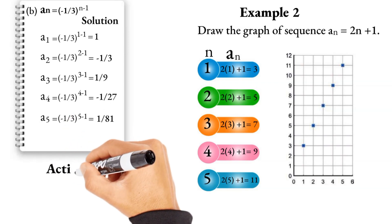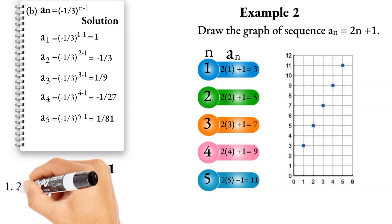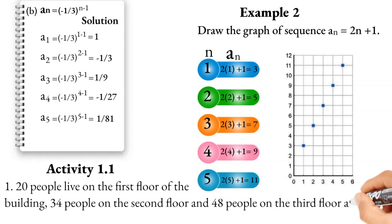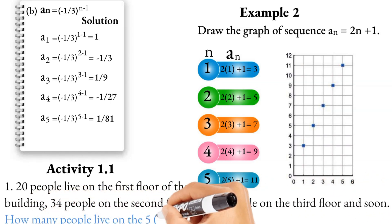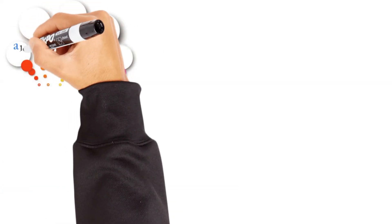Exercise 1.1: The first example — 20 people live on the first floor of a building, so a1 equals 20 people. The second floor has some people, and the third floor has 48 people. The question asks how many people live on the fifth and sixth floors of the building.